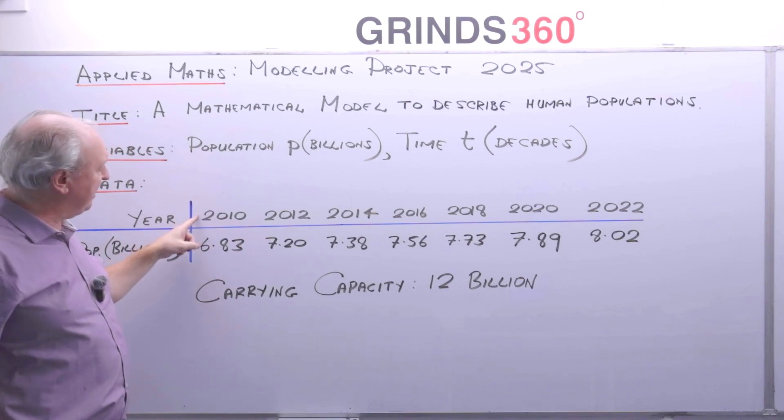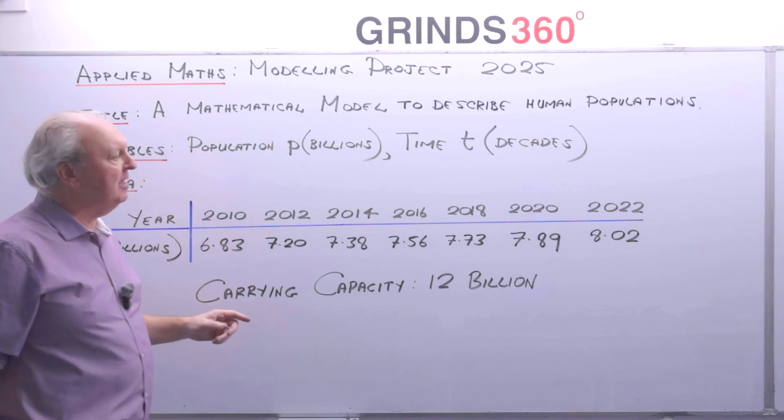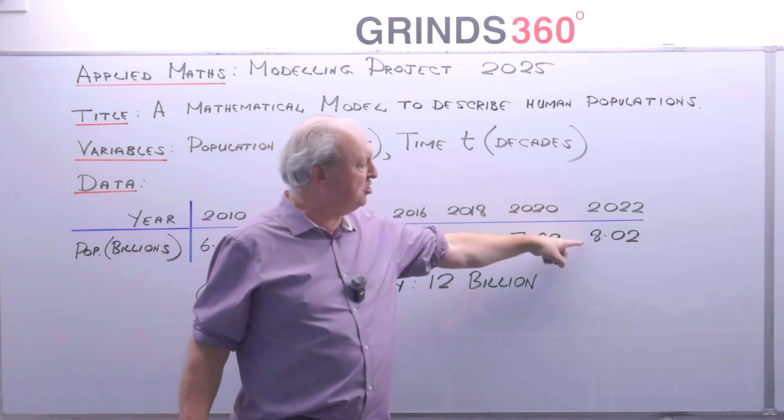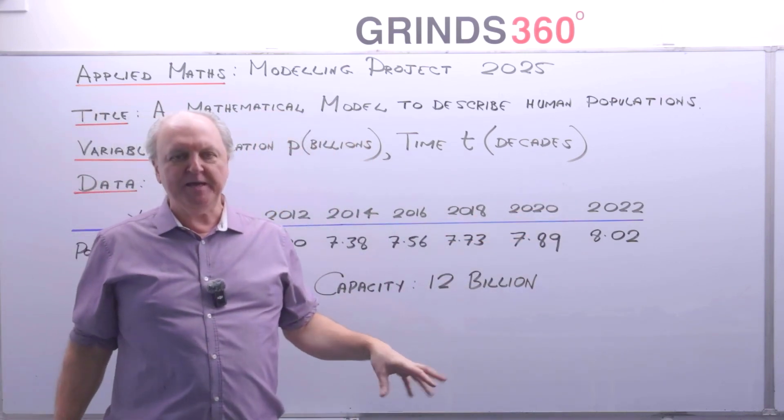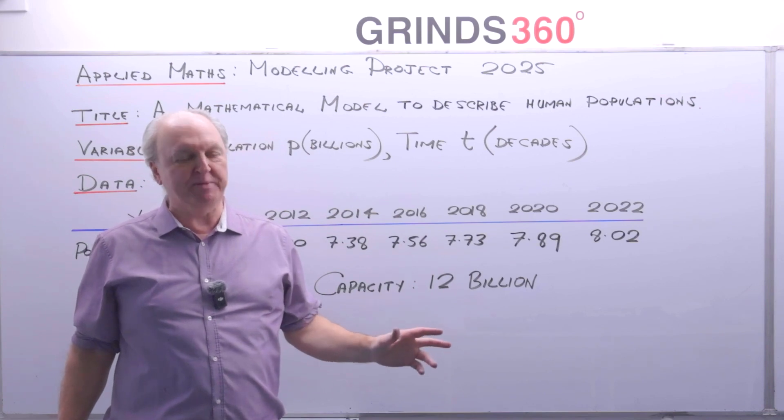Here's my data. In the year 2010 the population is 6.83 billion and then in 2022 is just over 8 billion. We have something called the carrying capacity. That's reckoned to be about 12 billion.